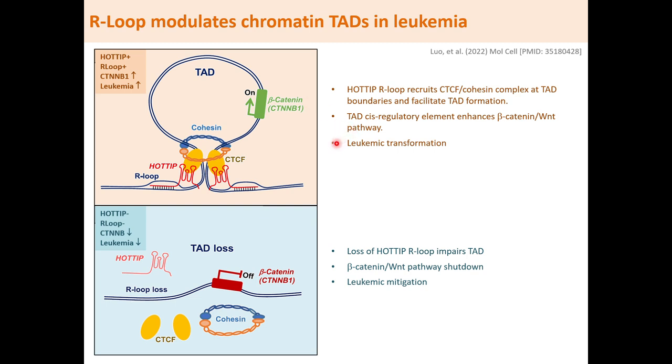Without the HOTAIR R-loops, the TAD is lost, which mitigates leukemia.